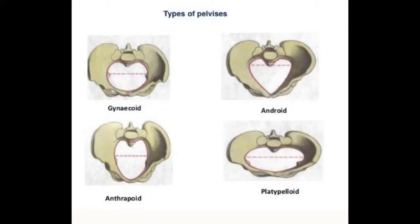Before we begin discussing pelvimetry, it's important to discuss pelvic shapes. There are four common pelvis shapes found in birthing individuals, and each pelvis shape affects labor and delivery differently. The most common pelvis shape is called the gynecoid pelvis, found in roughly 50% of birthing individuals. The inlet of the pelvis has a nice oval shape, and the mid-pelvis area located between the ischial spines is adequate in size, meaning there is enough room for a baby to pass through without any troubles, ideally.